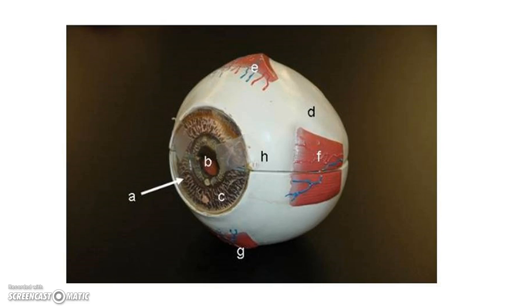Myopia is when you can see near but not far. That means the light isn't focusing on the retina, and then glasses or contacts can correct that. Hyperopia is when you can see far but not near.